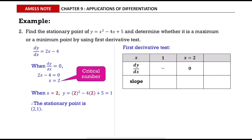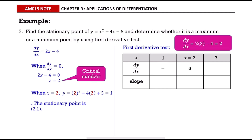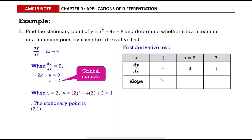On the right side, choose 3 to substitute into dy/dx and we get positive 2, so the sign is positive. The negative sign means the slope is negative, so the line is decreasing. dy/dx = 0 means it is a horizontal line. The positive sign means the slope is positive, so the line is increasing. From the shape of these lines we can conclude that (2, 1) is a minimum point.